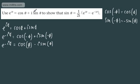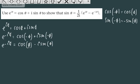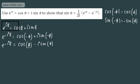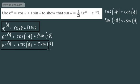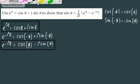So now let's look at the relationship we've got. We have e to the i theta equals cos theta plus i sine theta, and e to the minus i theta equals cos theta minus i sine theta. We're asked to show that sine theta is 1 over 2i times e to the i theta minus e to the minus i theta.